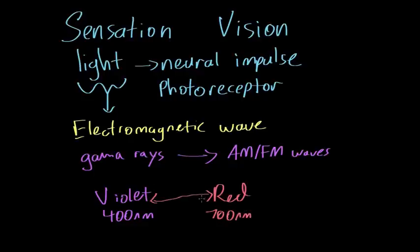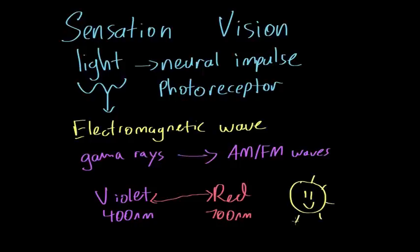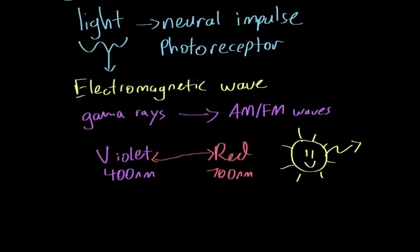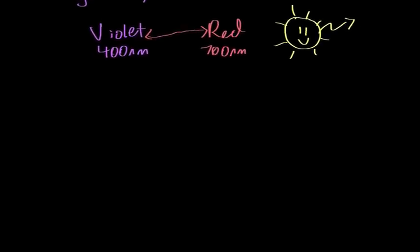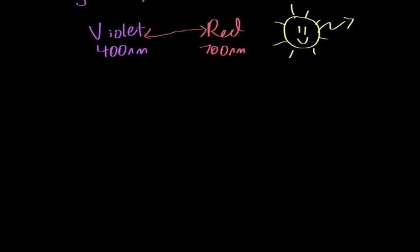Light is an electromagnetic wave emitted from many different sources. One of the most well-known is the Sun. The Sun emits light rays that come to Earth, and some of them go into our eyeballs. So let's look at what happens when a light ray from the Sun comes down and hits an eyeball.